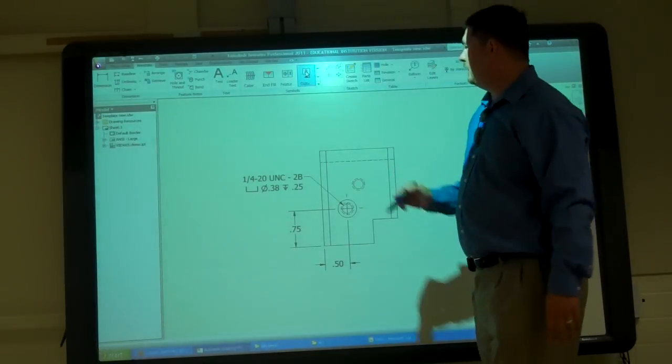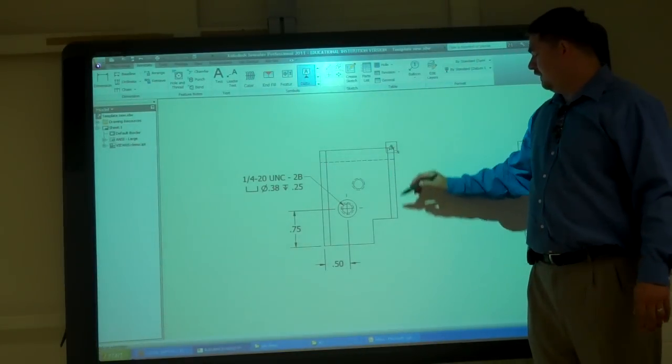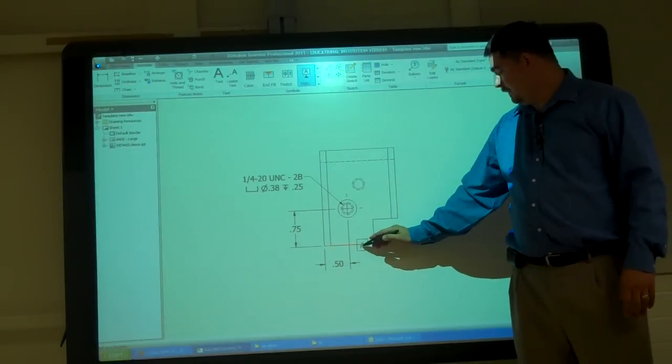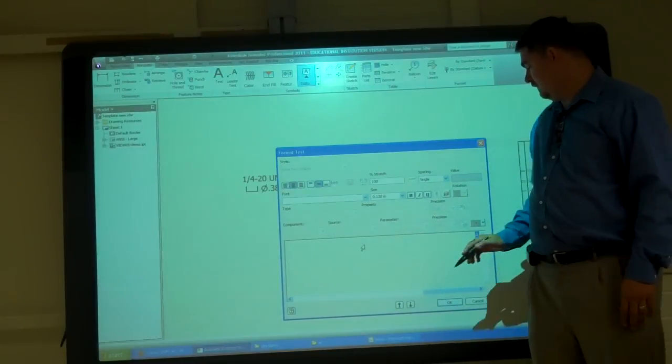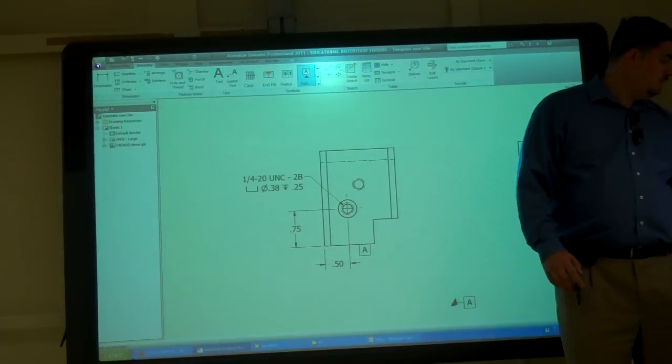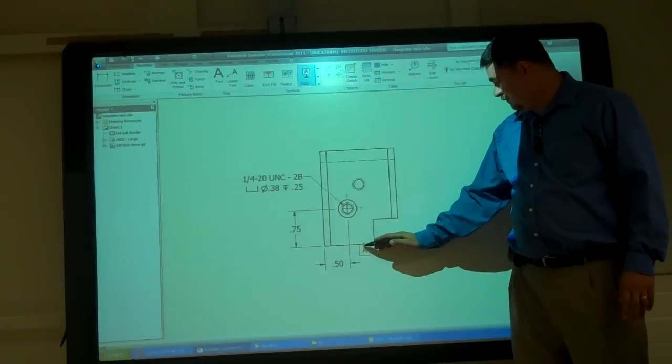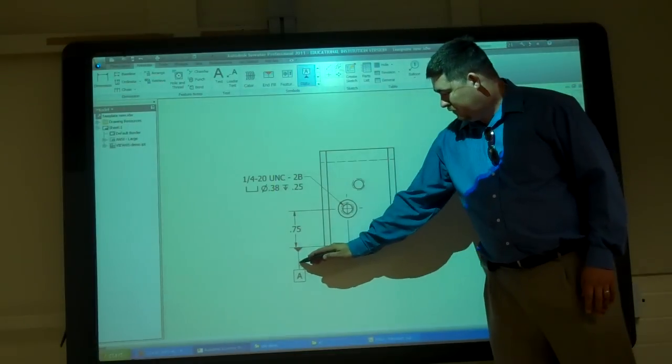So for the datums, I'm going to click on datum, I'm going to pick on—so if I wanted this bottom surface here to be a datum, I just click on the surface and say okay. And I can grab that little green dot and pull it over.